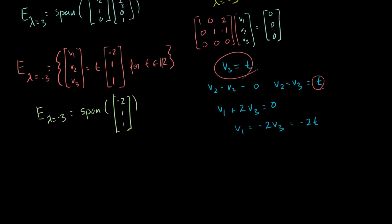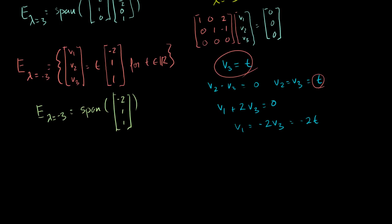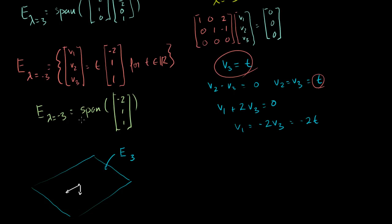Let's graph this for a good visualization. Our 3 by 3 matrix A represents some transformation in R3 and has two eigenvalues, each with a corresponding eigenspace. The eigenspace for eigenvalue 3 is a plane in R3 — it's the span of those two vectors. The eigenspace for eigenvalue minus 3 is a line perpendicular to that plane — it's the span of the vector (minus 2, 1, 1).